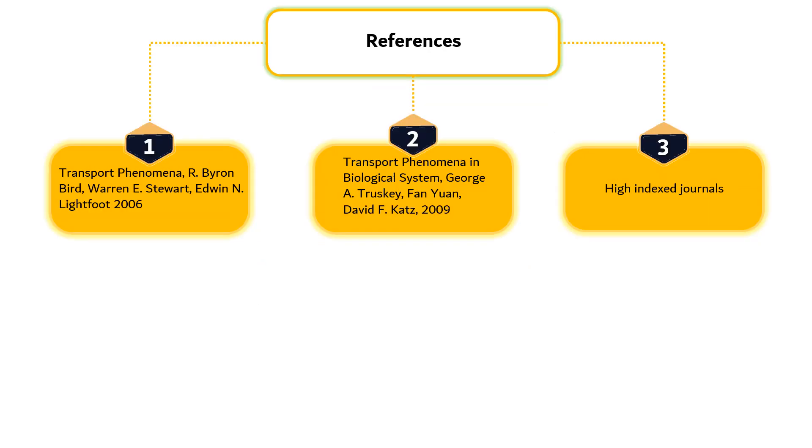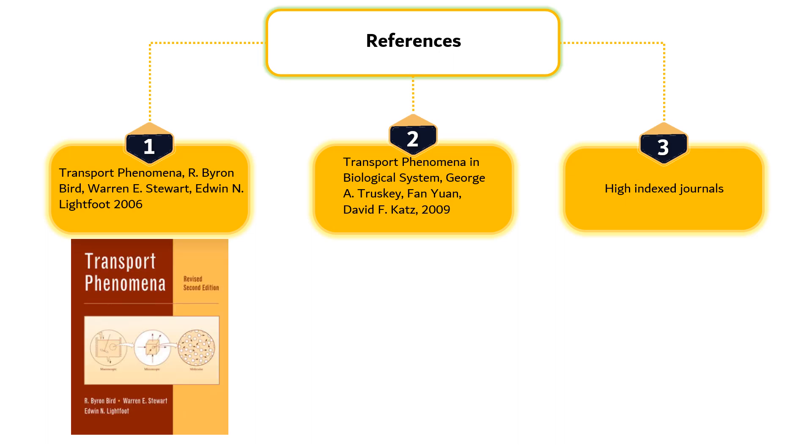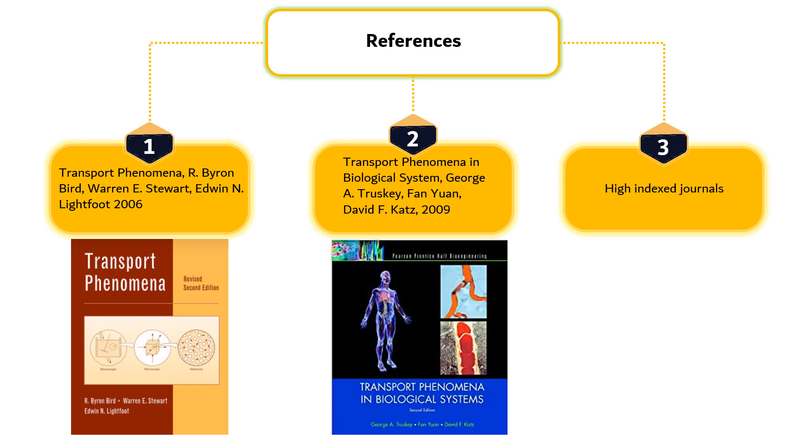There are three major references used in this study with the main textbook is Transport Phenomena authored by Bird et al. supported by a second textbook Transport Phenomena in Biological System authored by Truskey et al. In addition, numerous high-index journals are often referred when discussing recent transport phenomena in bioproduction system.